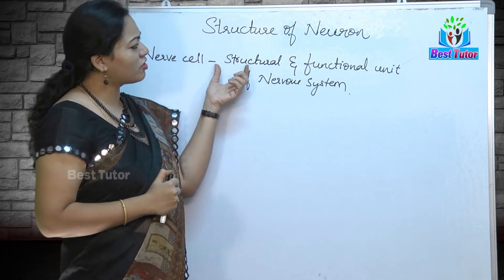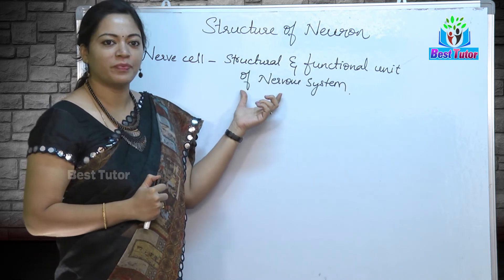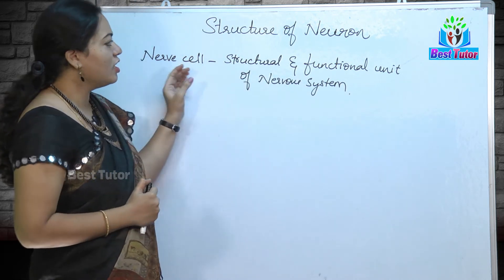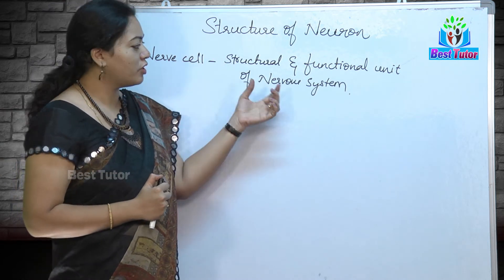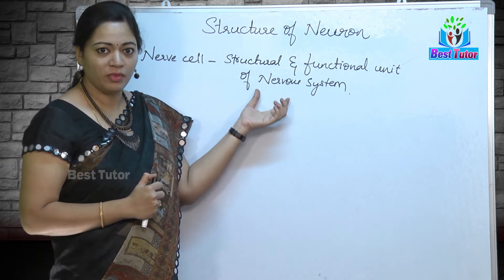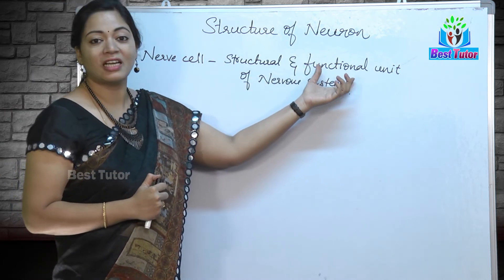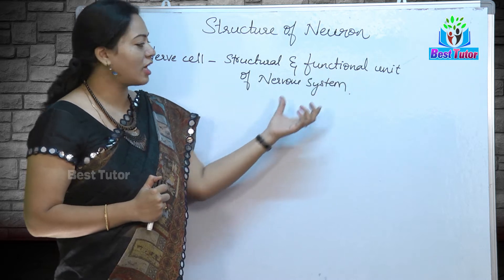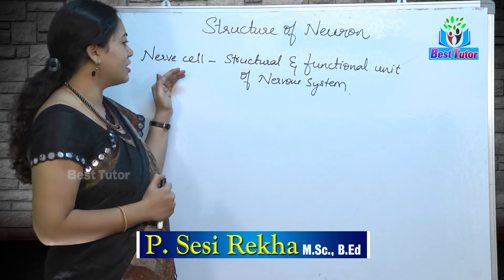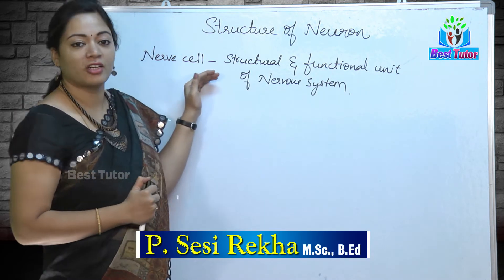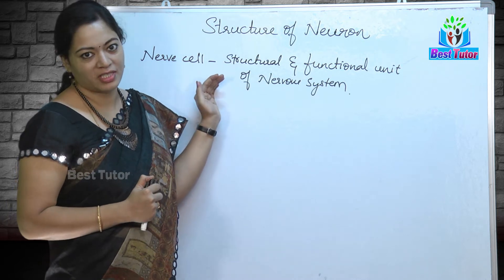What do we mean by structural and functional unit of the nervous system? The nerve cell forms the structure for the nervous system and also possesses certain functions carried by the nervous system. Hence, it is considered to be the structural and functional unit of the nervous system.